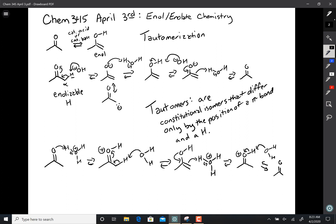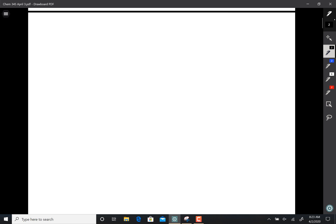So that's tautomerization. Now when it comes to the equilibrium structures of enols, enols have a tendency to be the unstable version with very few exceptions.